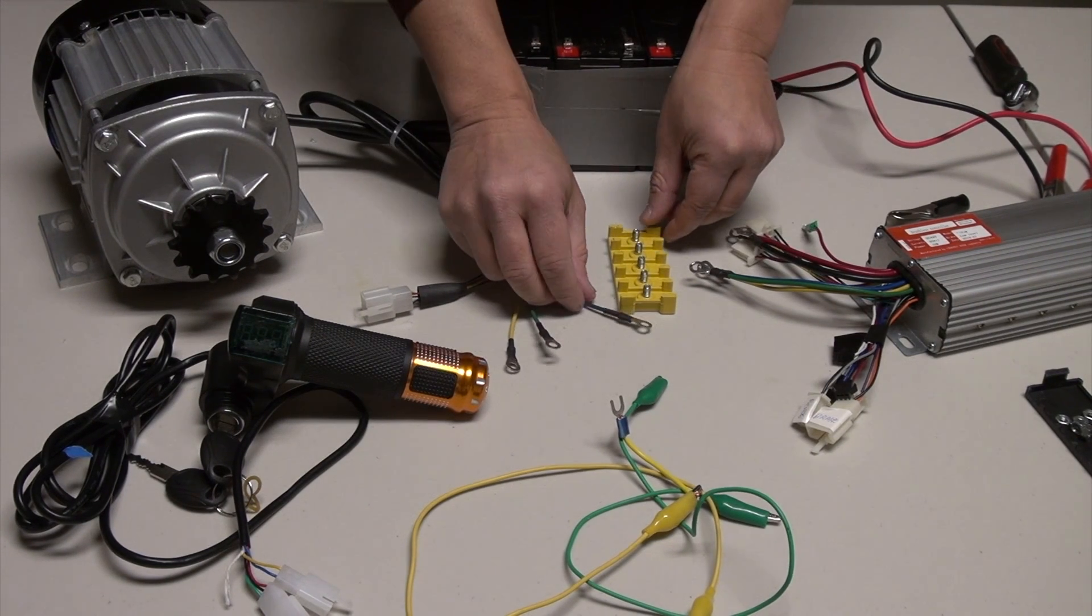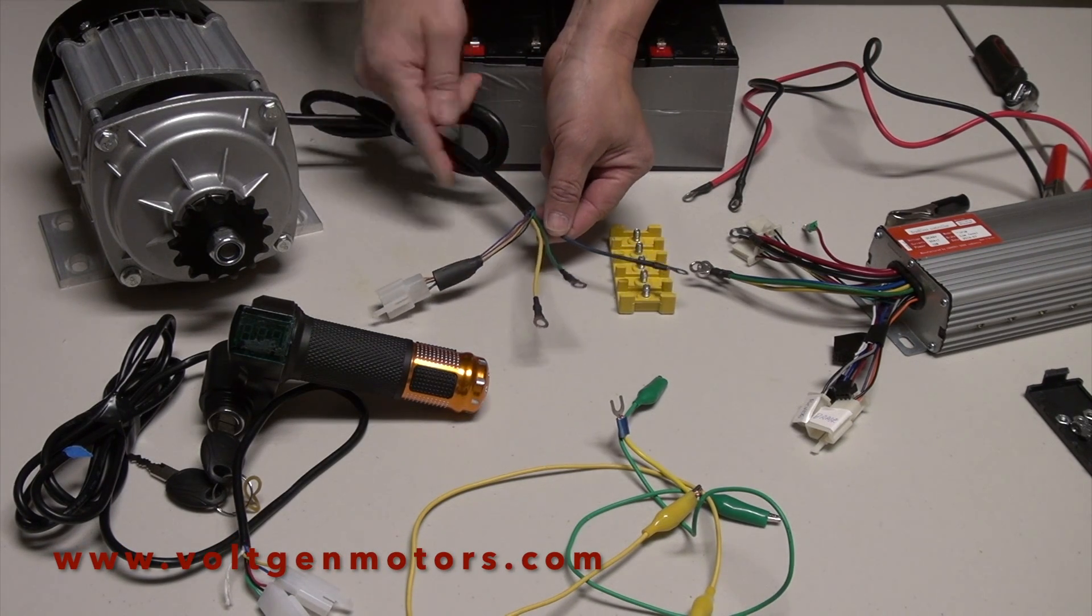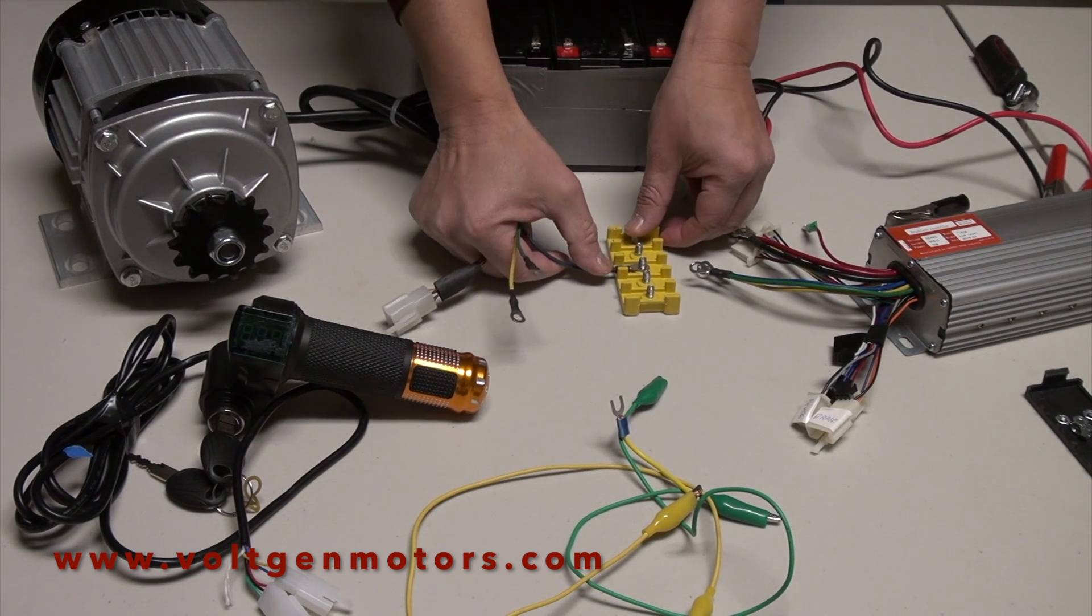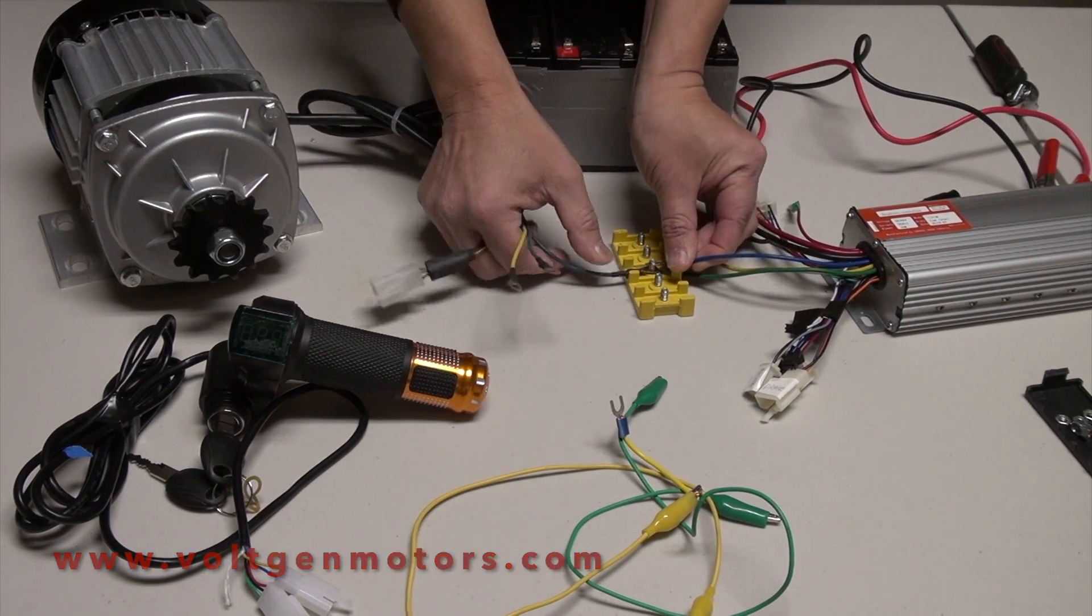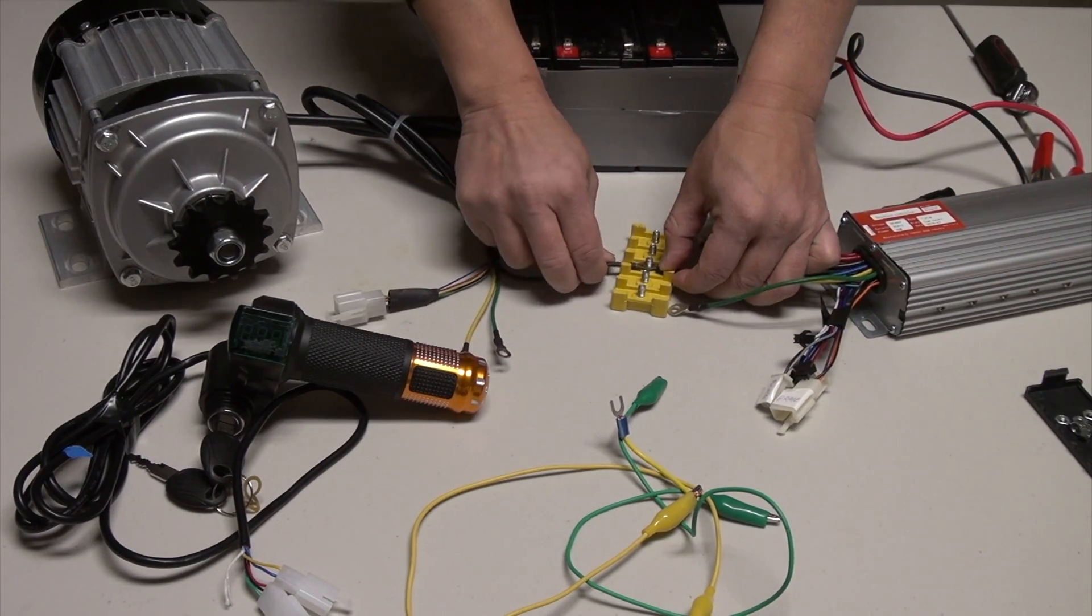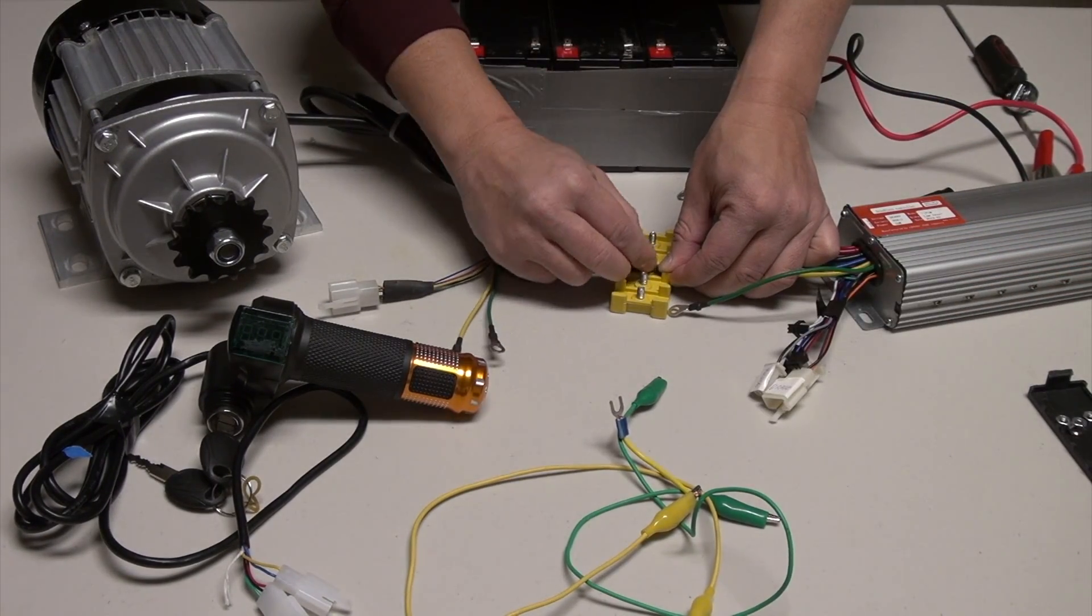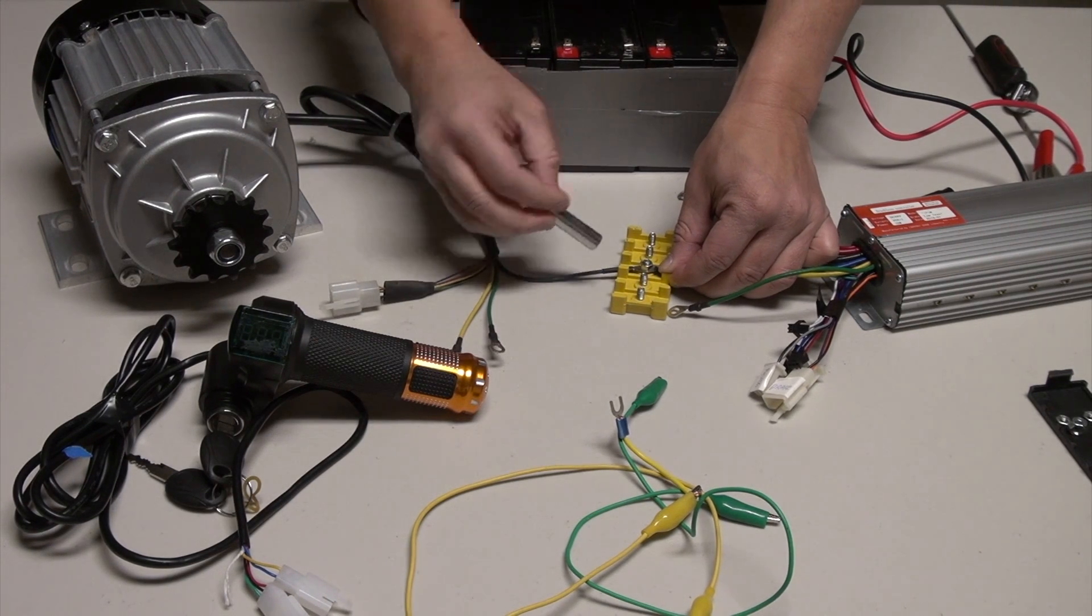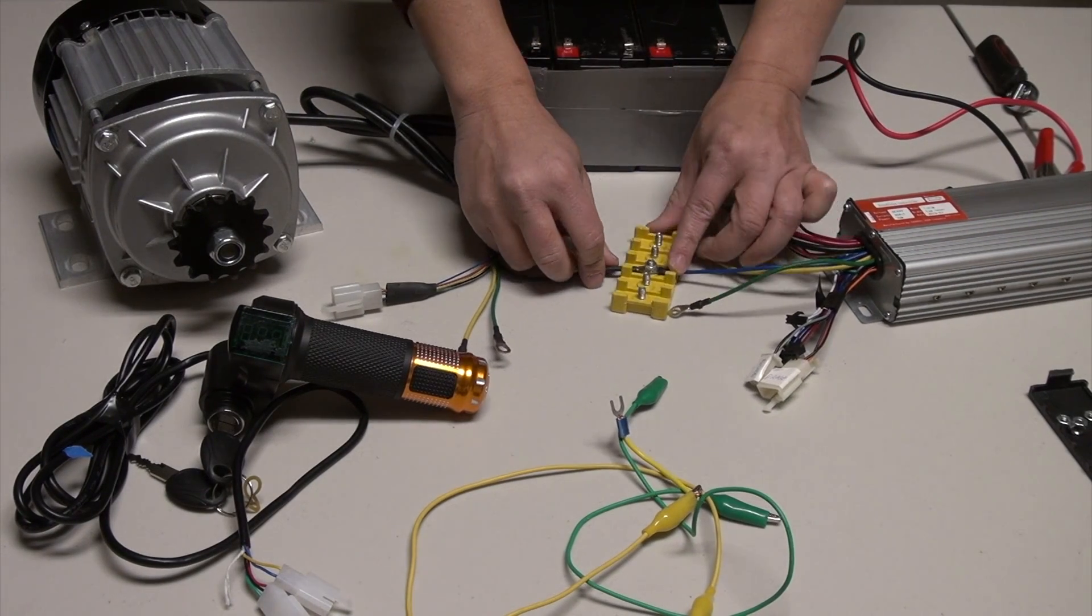Let's get to the exciting part of connecting the controller to the motor. Here is the phase wire from the electric motor. I am going to start with the blue wire. I'm going to put it there like that, make a connection, and tighten up.